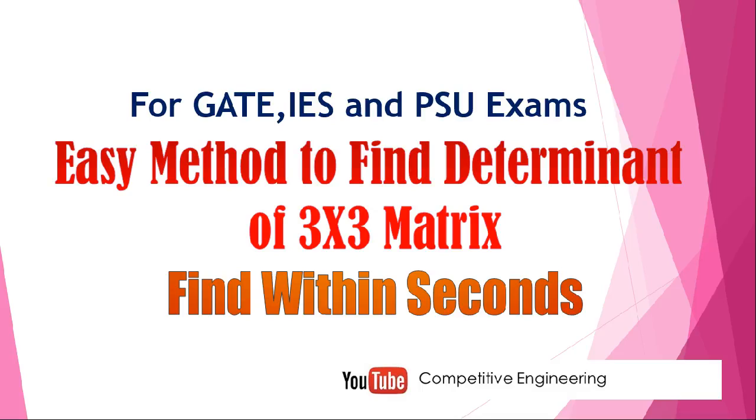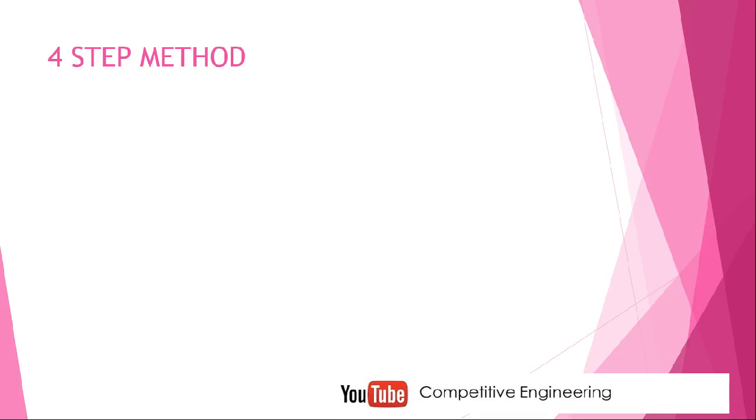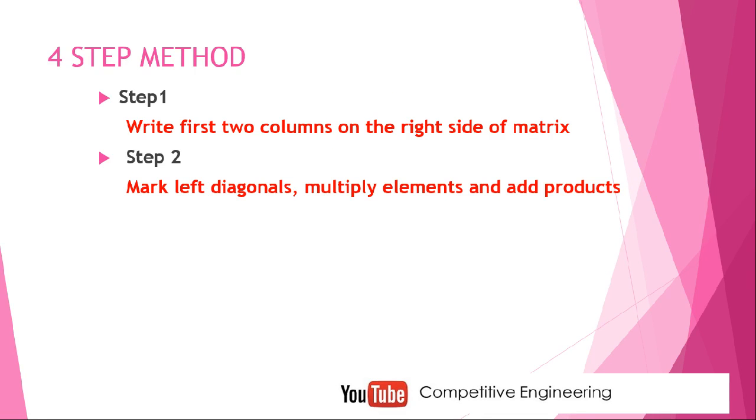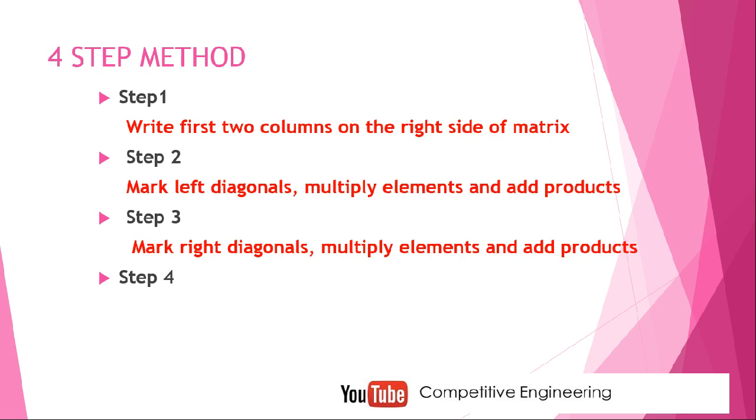This is a simple four-step method and there is no confusion of sign convention at all. Step 1: Write the first two columns on the right side of the matrix. Step 2: Mark the left diagonals, multiply the elements in diagonal, and add products. Step 3: Mark the right diagonals, multiply the elements, and add products. Step 4: The determinant equals sum in step 2 minus sum in step 3.